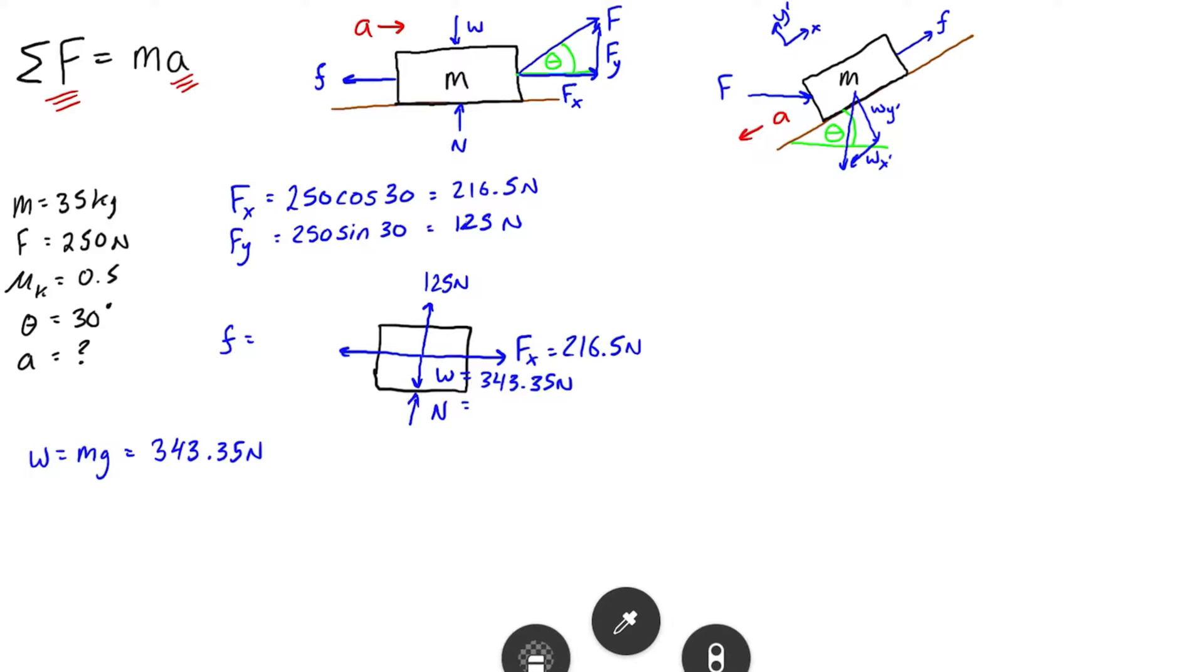And then to find n, the normal force, really what we have to do is take the sum of forces in the y direction. We can write this as equal to ma in the spirit of kinetics, but really this is equal to zero because we know that the acceleration in this case is going to be zero. We can see that the weight here, 343, is bigger than the fy, so there is going to be a normal force, and it's all going to net out to zero.